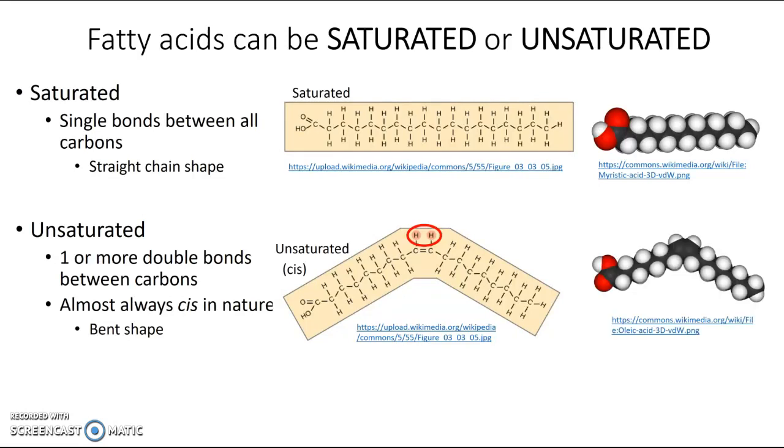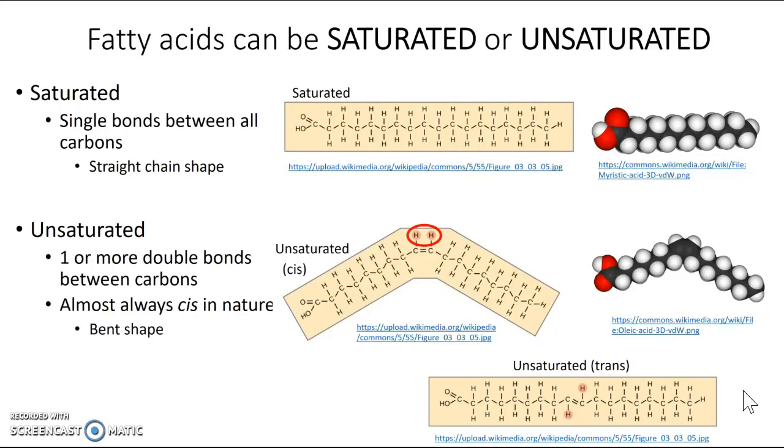But you might be wondering, is it possible to have the hydrogens on opposite sides? Is it possible to have the trans formation? And the answer is yes, it is possible to have an unsaturated fatty acid with the hydrogens on opposite sides of that double bond in the trans formation. And that would lead to a straight chain shape because the hydrogens are far enough apart so that they're not repelling each other and allows the molecule to have this generally straight shape. But that almost never occurs in nature or in cells. So that trans formation is possible, but extremely rare. And we're going to assume that for our purposes, any unsaturated fatty acids are always going to be cis and bent.